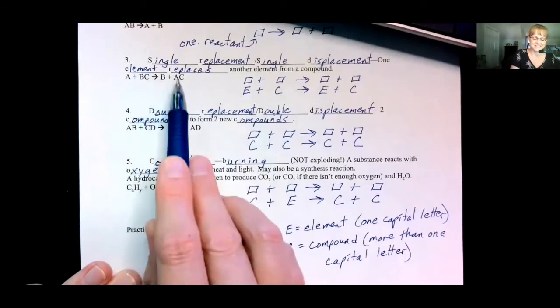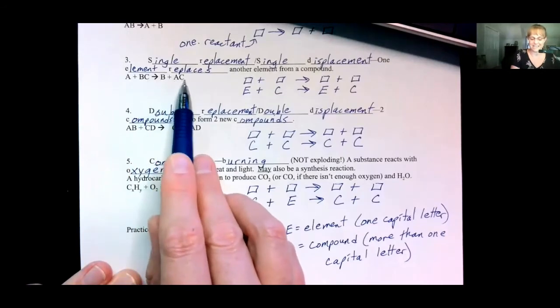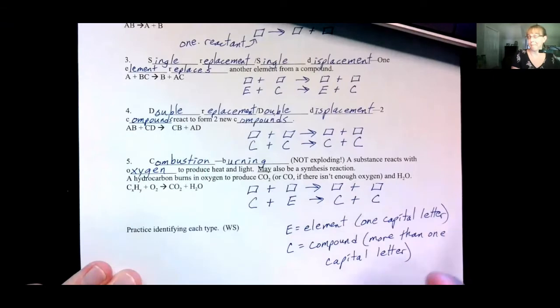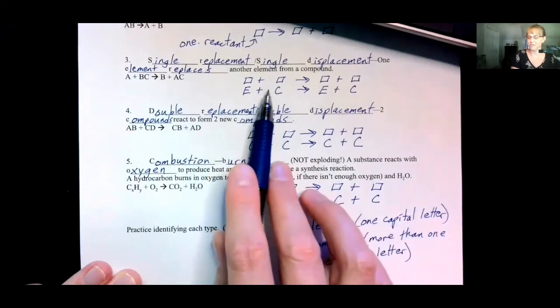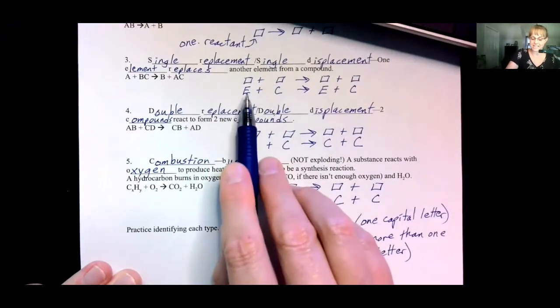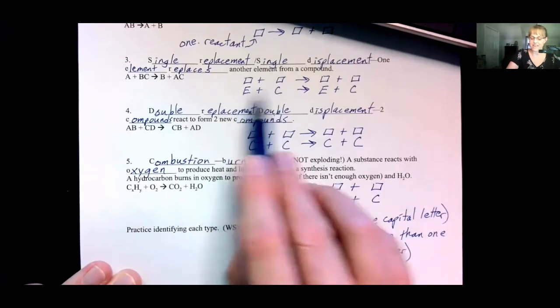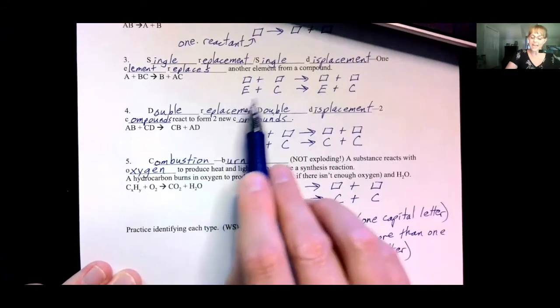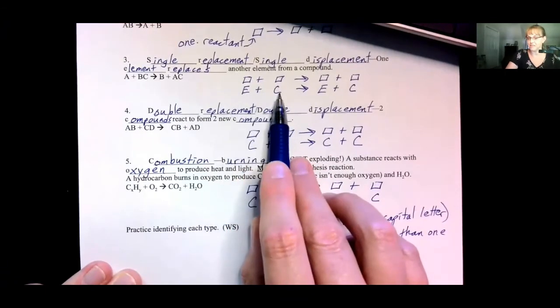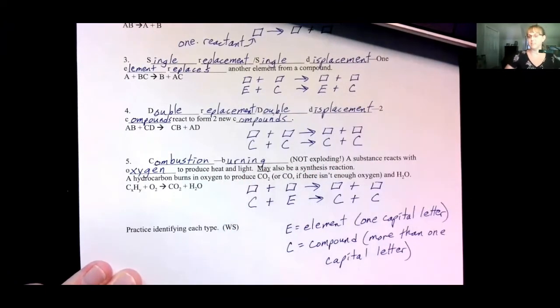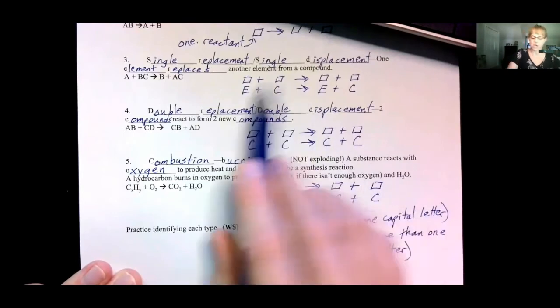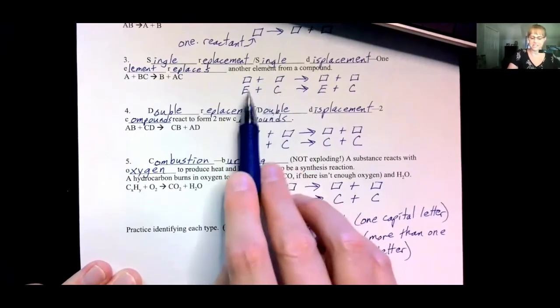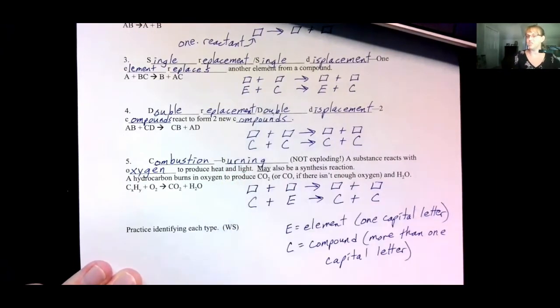So A and C are now dating and B is by itself. So that's a single replacement. You will see an element plus a compound on the reactant side and an element plus a compound on the product side. And it's okay if you have a compound plus an element or a compound plus an element. It's okay because one plus two is the same as two plus one. Addition is commutative; you can switch it.